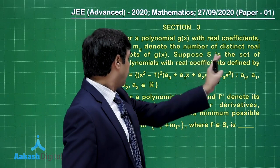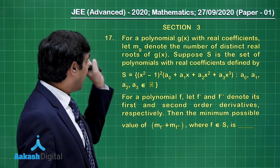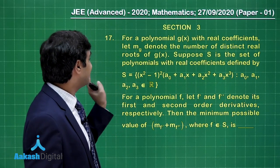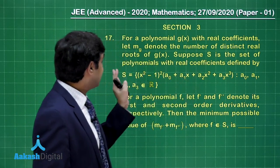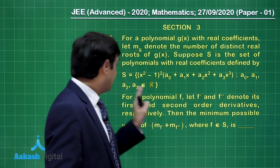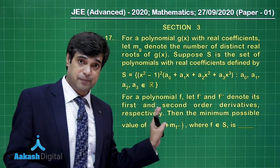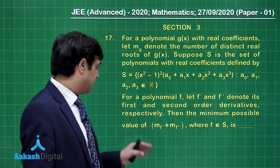This is in section 3. For a polynomial G(x) with real coefficients, let M(G) denote the number of distinct real roots of G(x). Suppose S is the set of polynomials with real coefficients defined by this one.